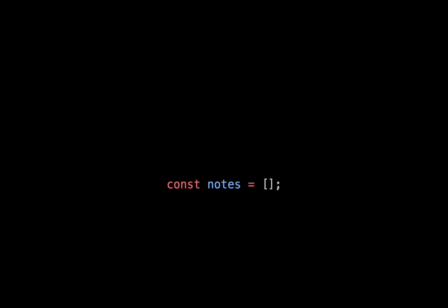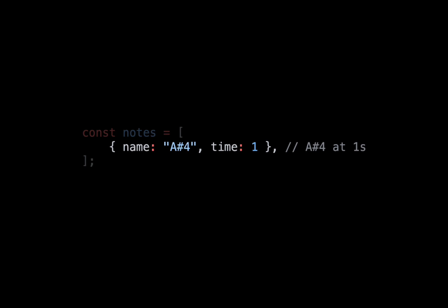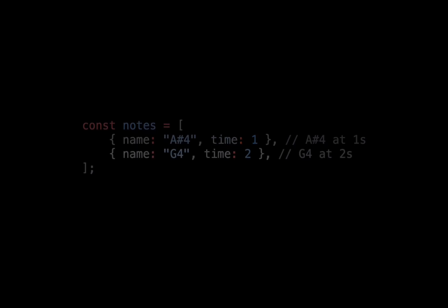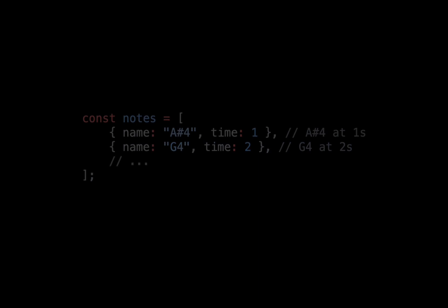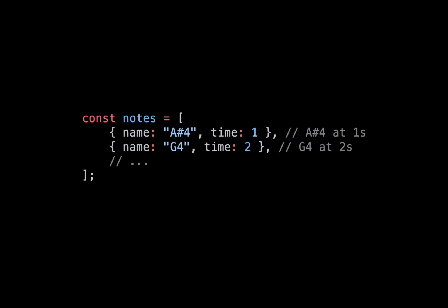Before starting, I would like to define an array called notes. The array of notes will have objects which have two properties: one being the name of the note so that we can play it correctly when the ball bounces, and the other being the time relative to the start of the song at which the note will be played. This array would usually have a couple hundred notes so that the ball bounces for a considerable amount of time, but in this case we're just going to simplify it to only a couple notes.